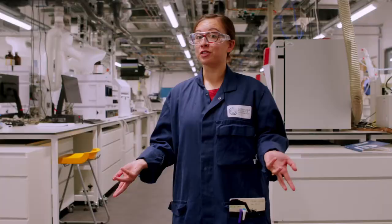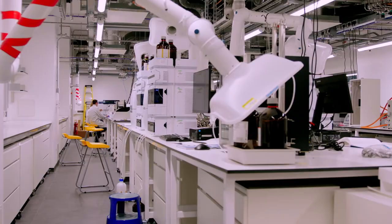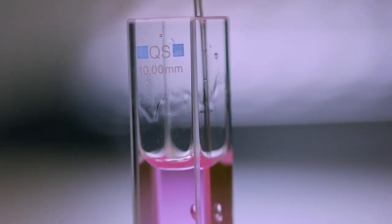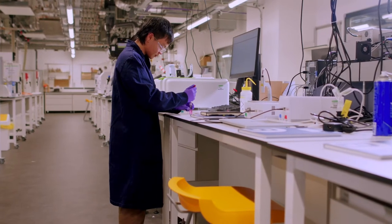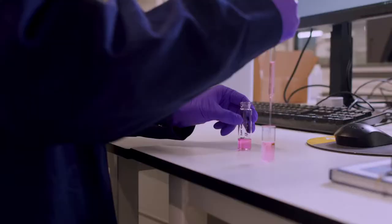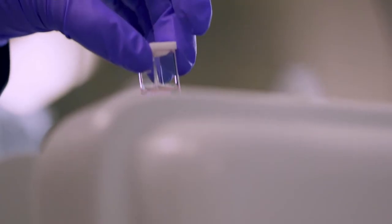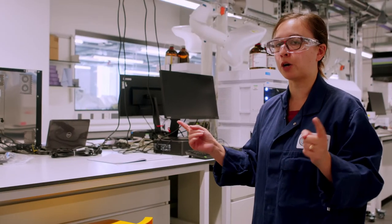So welcome to our instrument lab. In here we have lots of equipment that enable us to characterize different plastics or polymers. On this side we have our gel permeation chromatography suite. What this essentially does is gives us information on our polymer chain length.